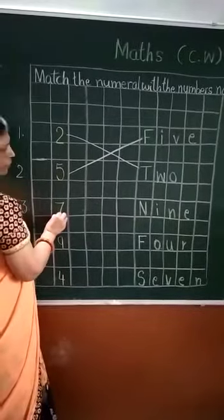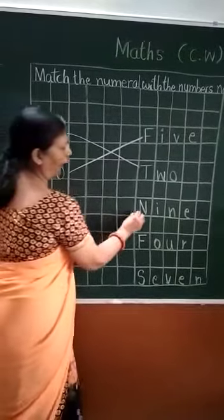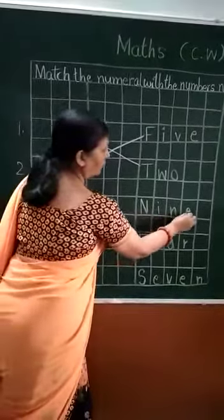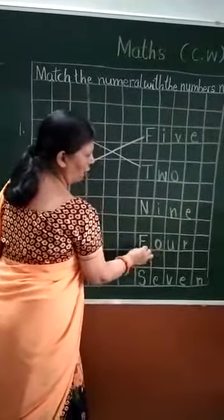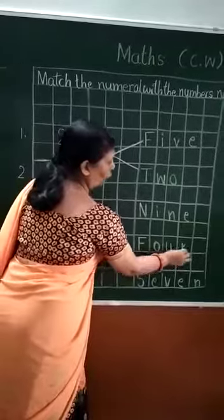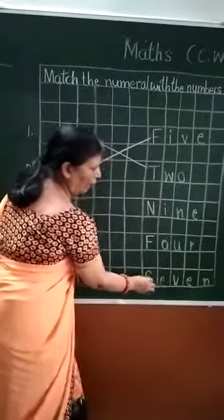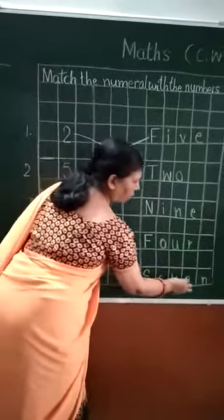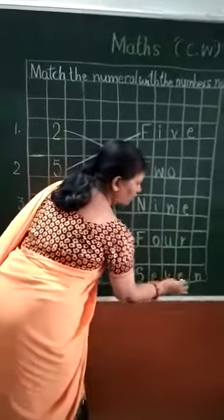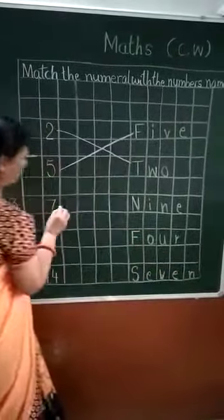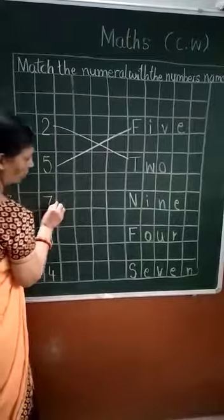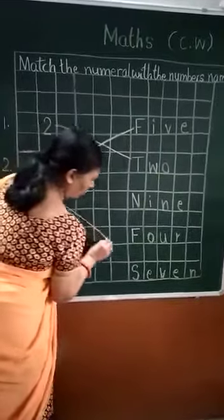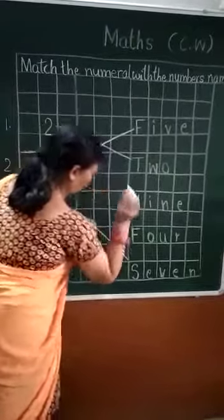7. N-I-M-E-9-F-O-U-R-O-S-E-V-E. Then 7 — 7 is 7.